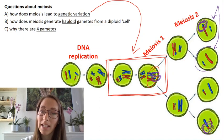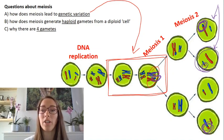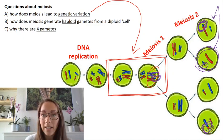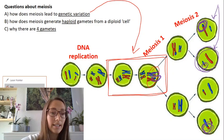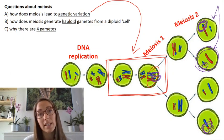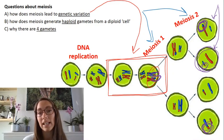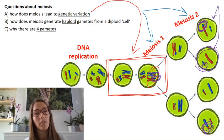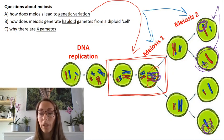And this cell down here isn't genetically identical either because we've had some more crossing over occur. The second thing that leads to genetic variation in meiosis is independent assortment. Independent assortment happens during meiosis one and meiosis two, and it's basically how the chromosomes line up along the equator during metaphase. If you're not sure about that, just go back to the video and watch it through again.